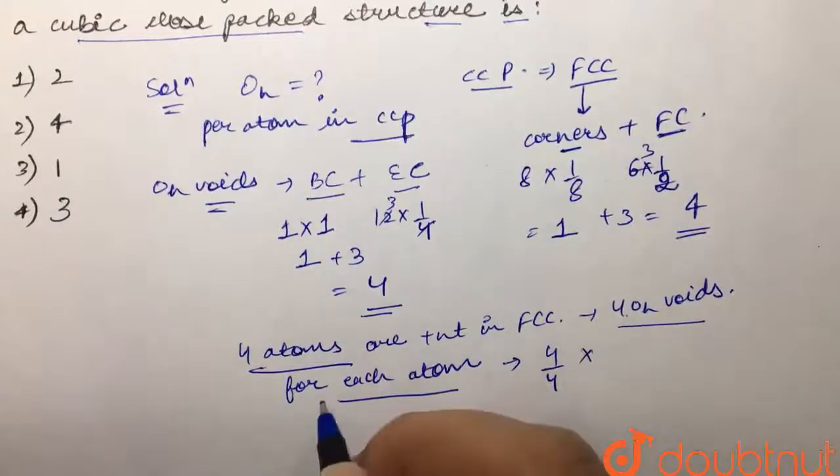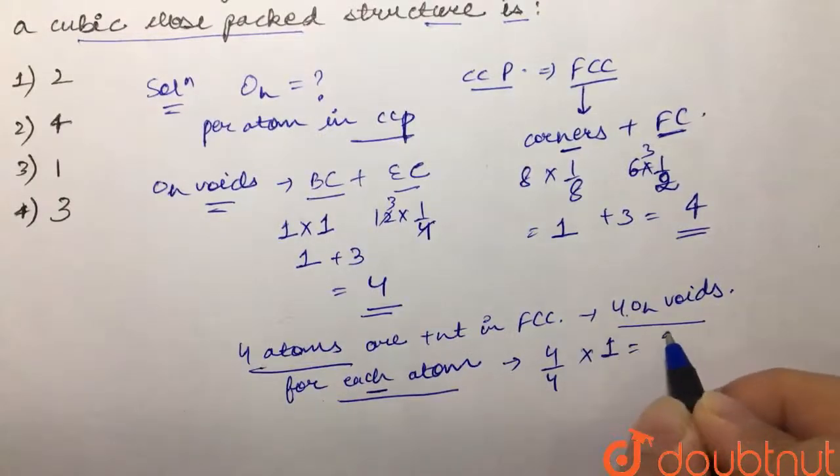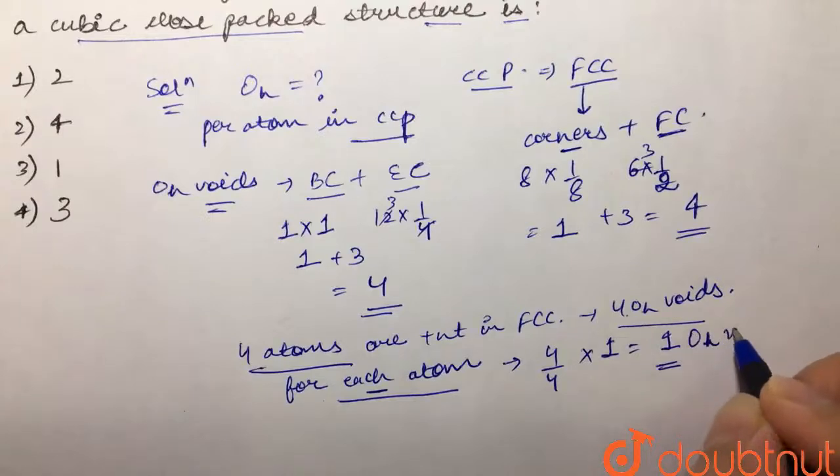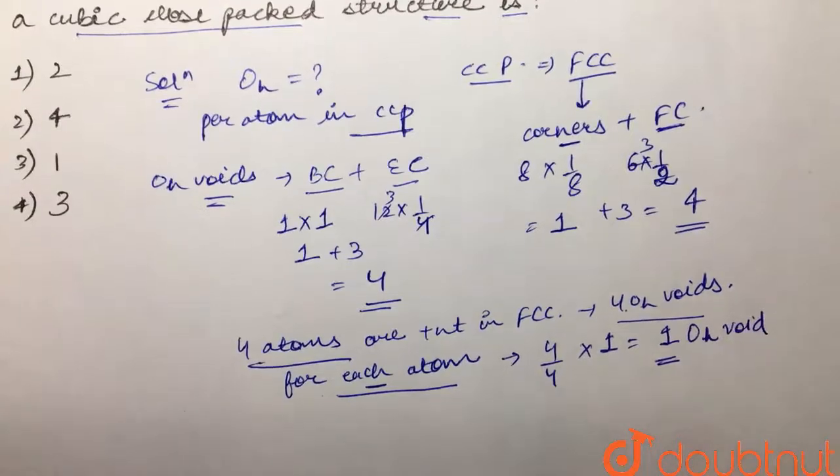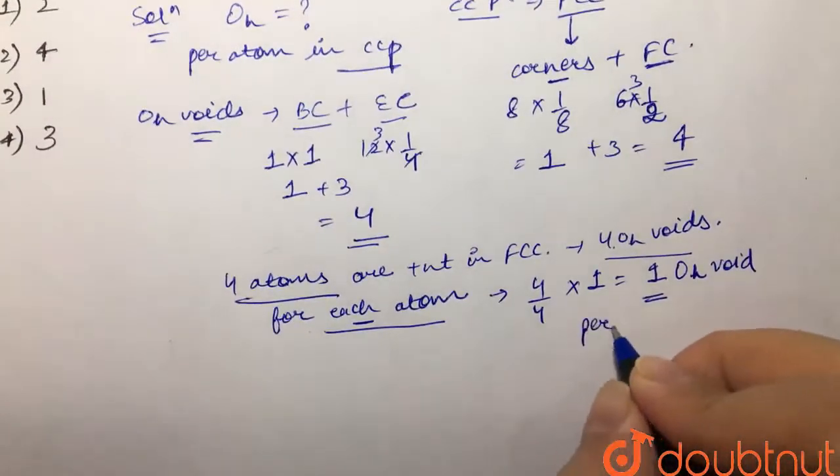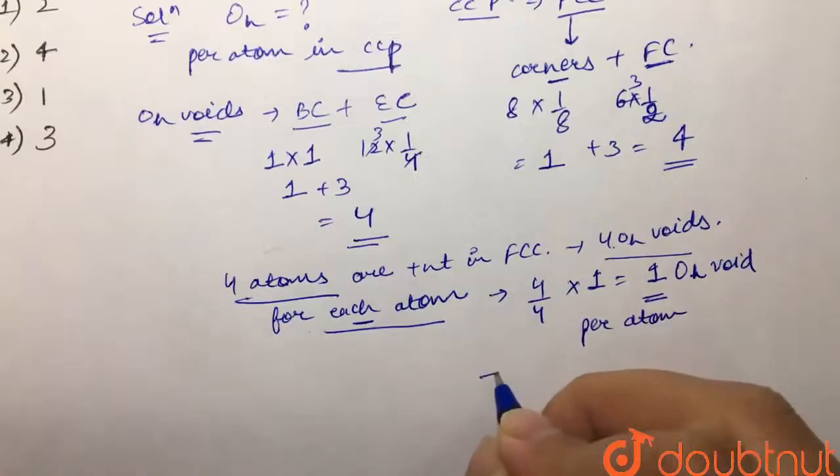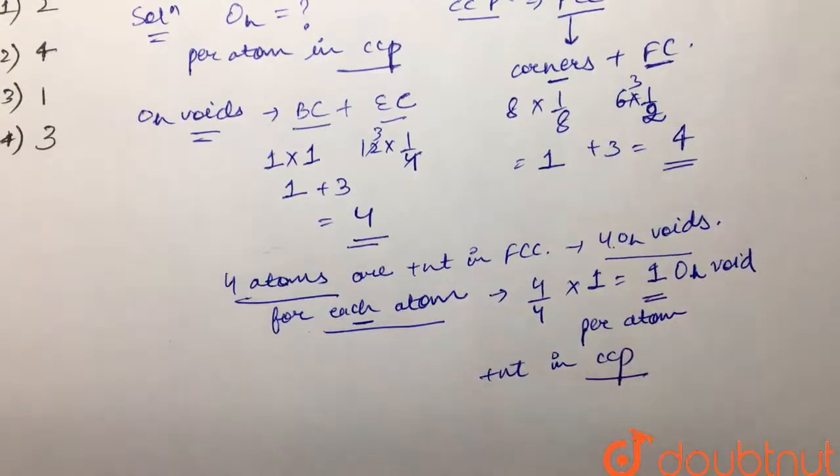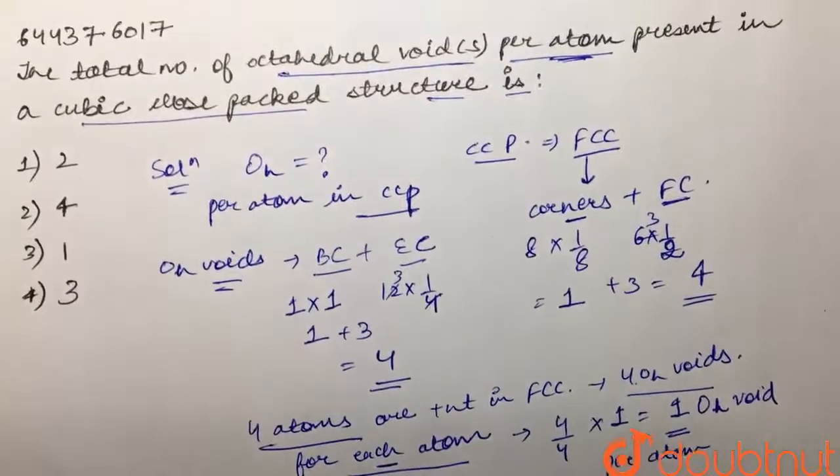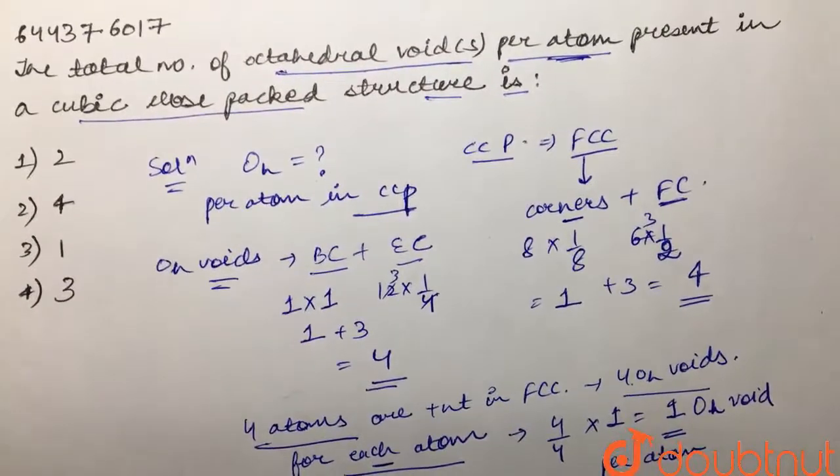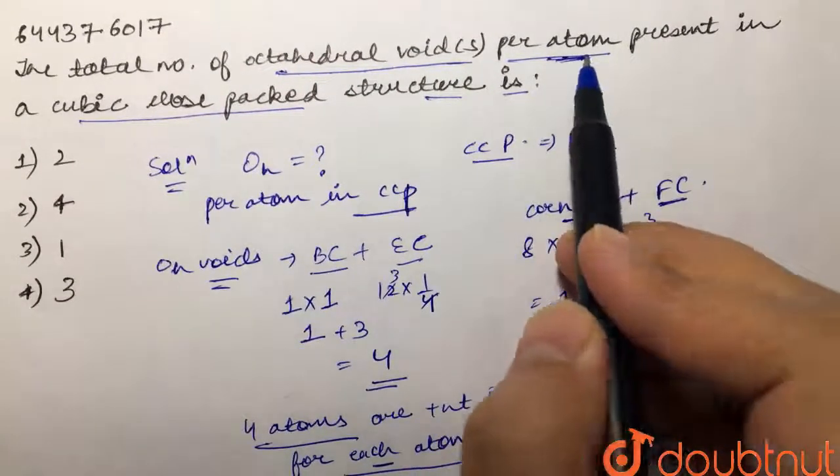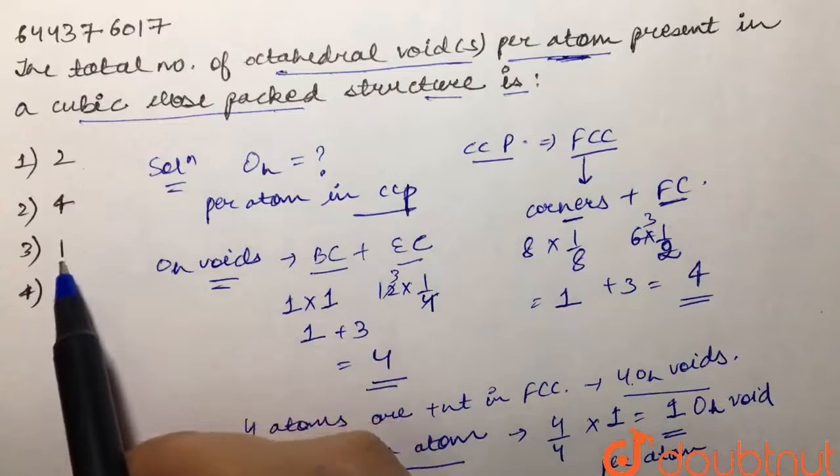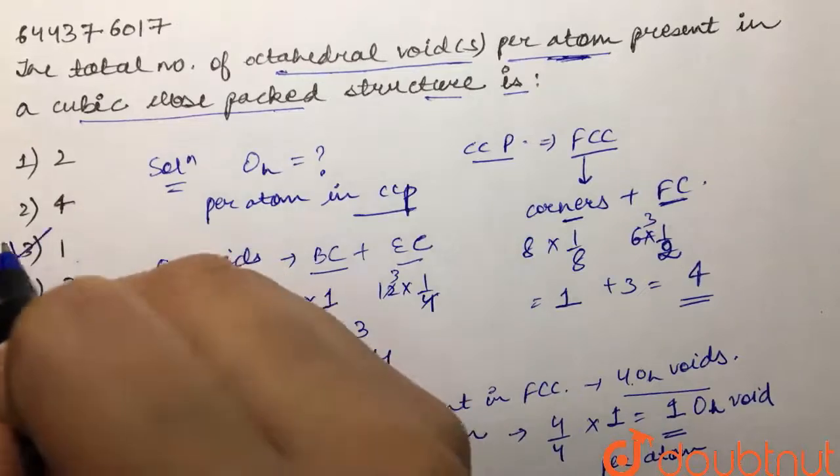So we can say that we have one octahedral void per atom present in CCP structure. So our answer to this question is that we have one octahedral void per atom present in the CCP. So one is given in option number three, so our answer to this question is three.